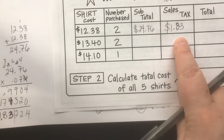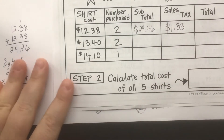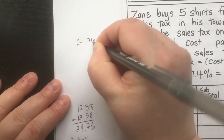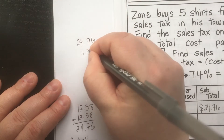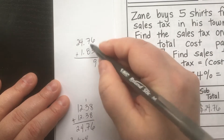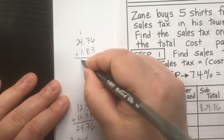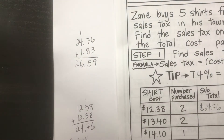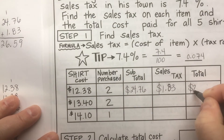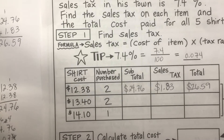Now that we've found the sales tax, to find the total cost we add our price and our tax together. $24.76 plus $1.83: six and three is nine, seven and eight is fifteen carry one, four and one and two is seven, and two. Zane paid twenty-six dollars and fifty-nine cents for those two shirts.